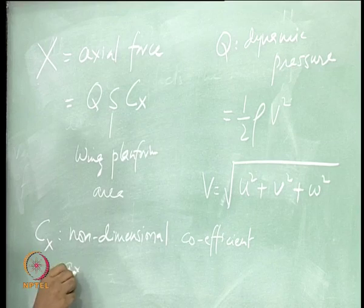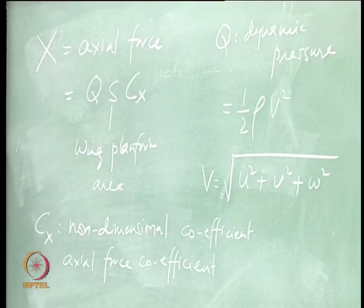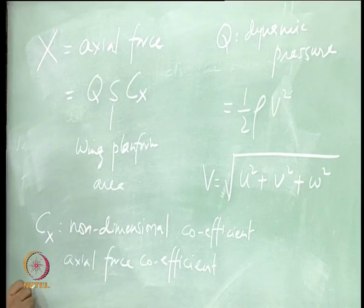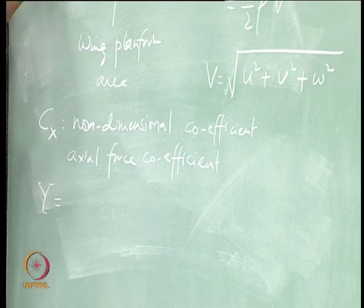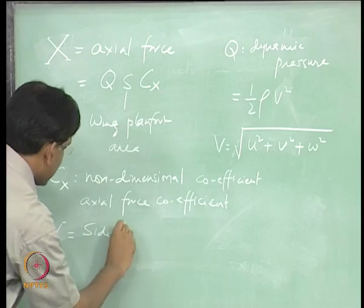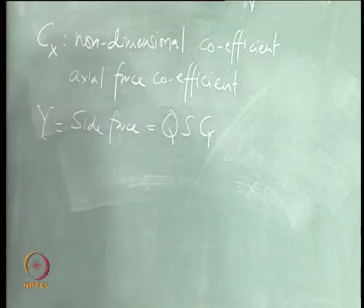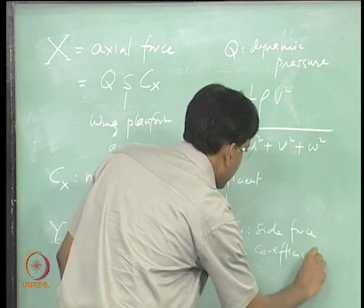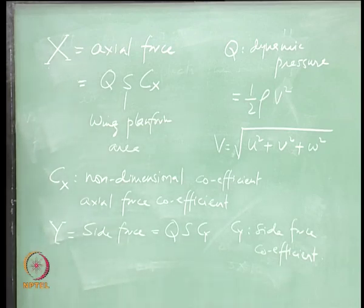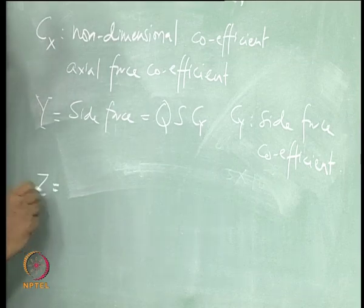Cx is the axial force coefficient. The force along the y axis is called side force, which is equal to q·S·Cy, where Cy is the side force coefficient. Z is the force in the vertical direction along the Zb axis, with its corresponding non-dimensional coefficient Cz.